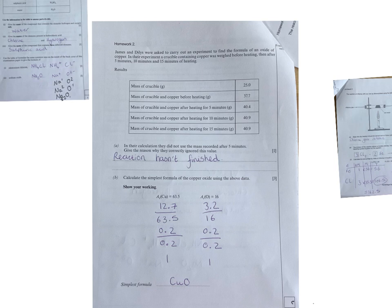In their calculation, they did not use the mass recorded after five minutes, give a reason why they ignored their value. The reaction wasn't really occurring, it hadn't finished yet. So that's why we ignore the value because you've got the same two values there. Simplest formula, that's the same as empirical formula.